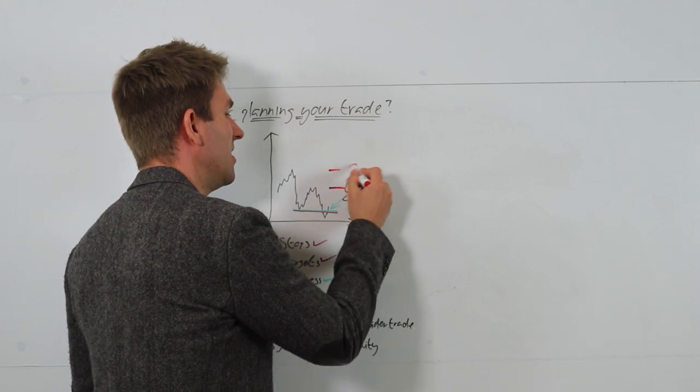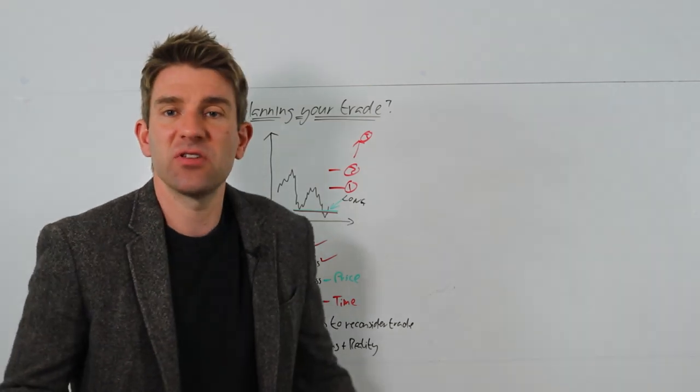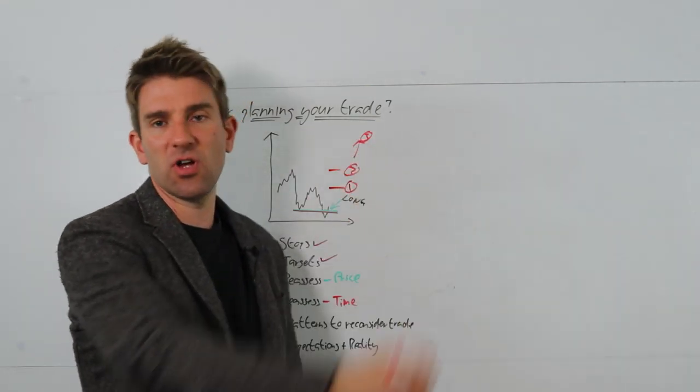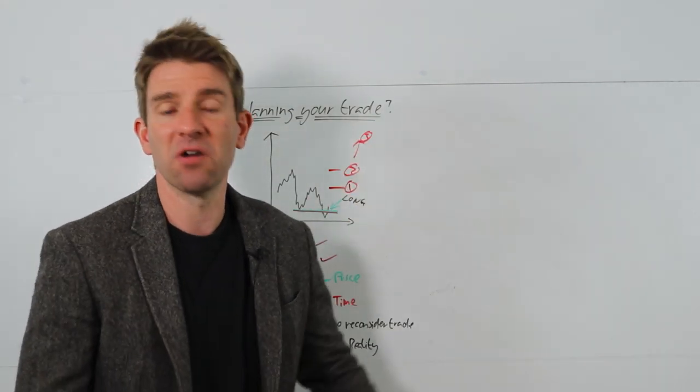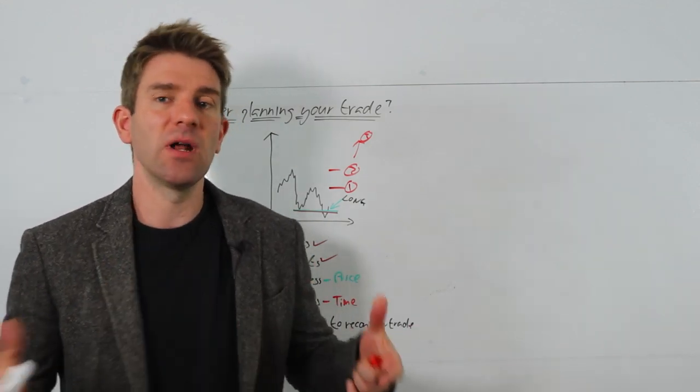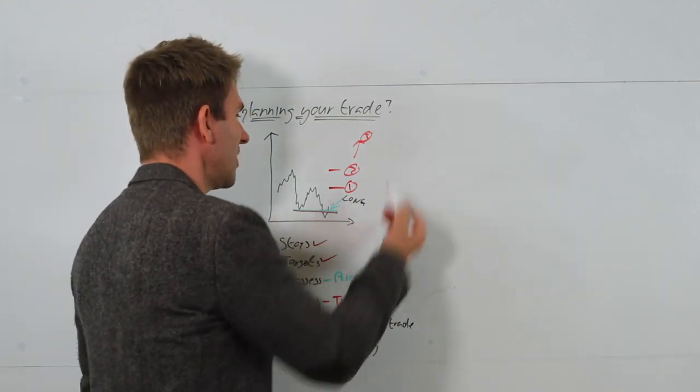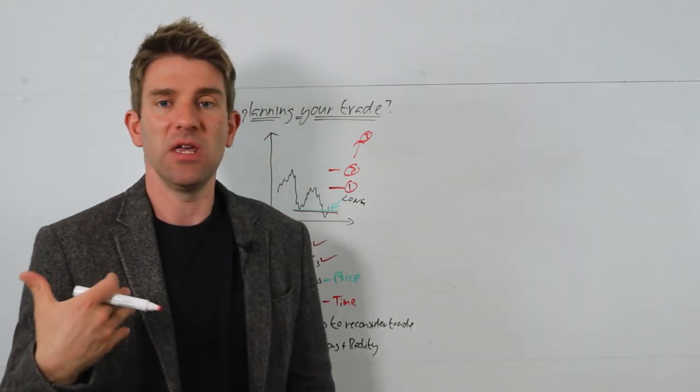And then you're going to have some targets. So you're going to decide, okay, I'm going to scale out this position. You might start with a rough road map. You might say, okay, I'm going to do my first scale here, I'm going to do my second scale here, and I'm going to allow my third to be a trailer. Pretty standard stuff - you're coming out at resistance and the third one might be a trailer to see if you get a runner.